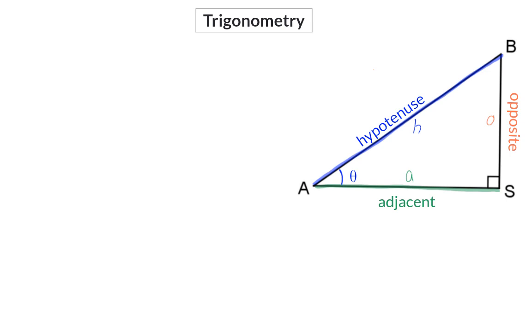As I have already mentioned, the ratios of these side lengths will always stay the same as long as the angle sizes stay constant. With these three pairs of sides, we can make three combinations of ratios.